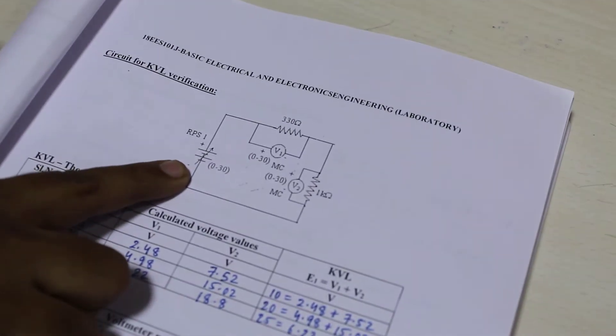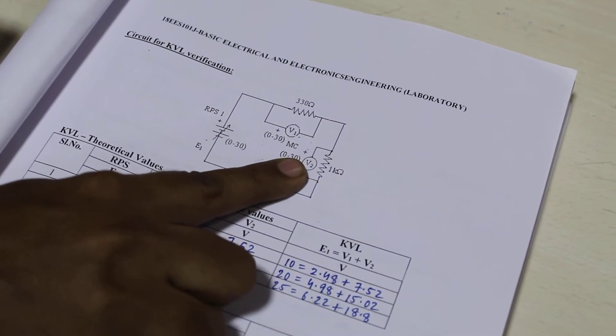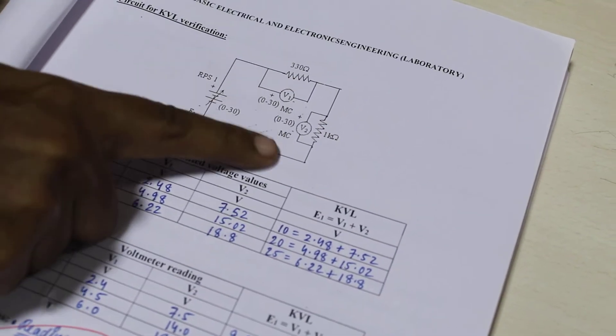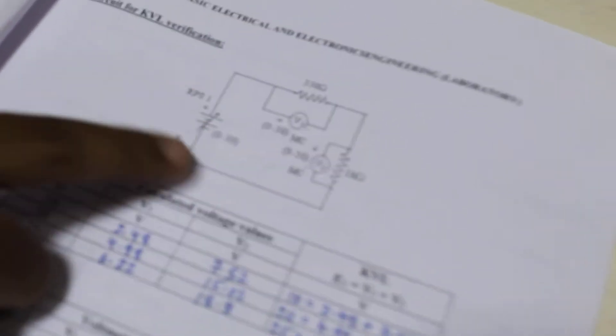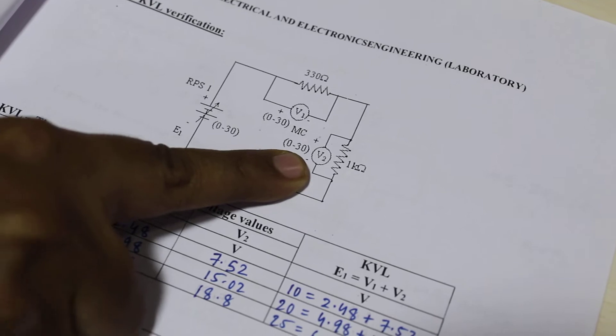You have a circuit which has 1 RPS. Whatever the voltage is there, it is going to get dropped across these two resistors. Across these resistors, we have connected 2 voltmeters. This input voltage should be equal to the sum of these two voltages across the resistors.